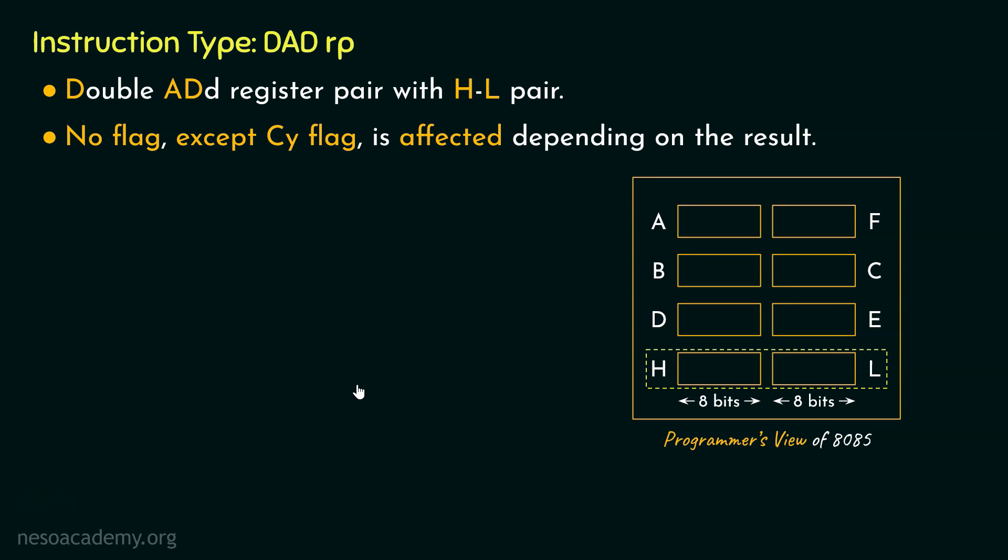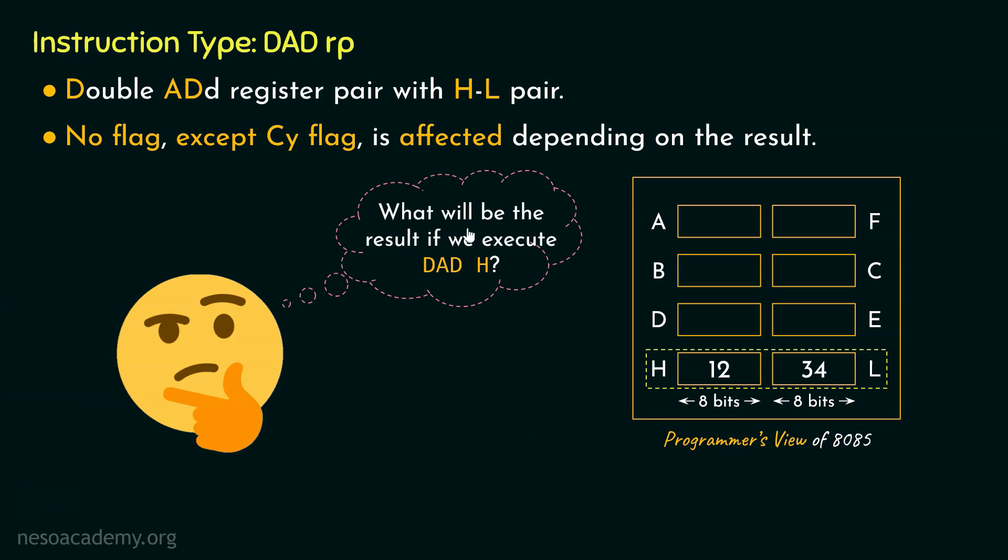Now I have got a question for you. Say within the HL register pair we have loaded the value 1234. Now can you tell me what will be the result if we execute the instruction DADH?